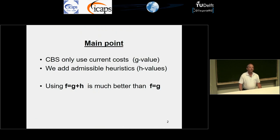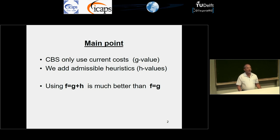It's a short talk so I'll be very brief. CBS is conflict-based search for multi-agent pathfinding, and it only uses current costs like G-cost in A*. We add admissible heuristics for the first time, and we know that using F equals G plus H is better than just using F equals G. That's the talk.